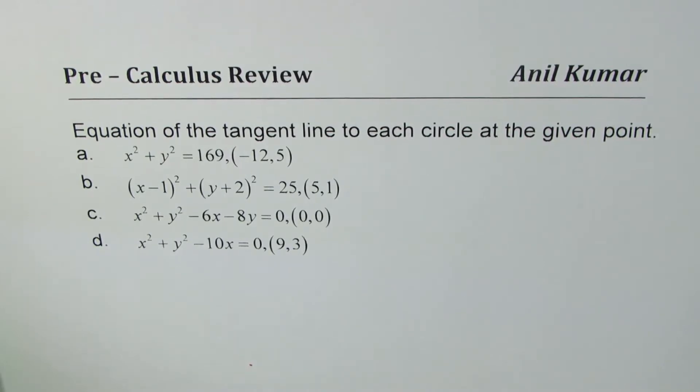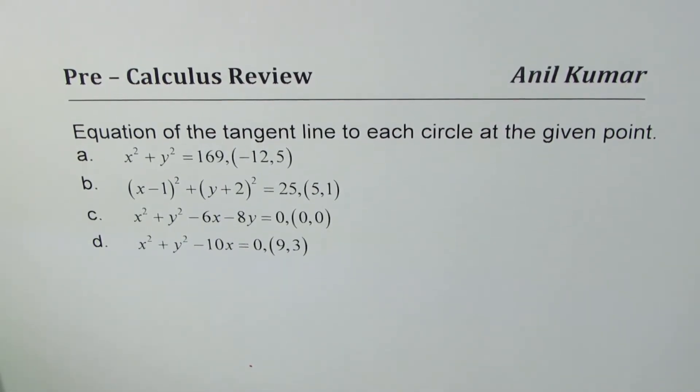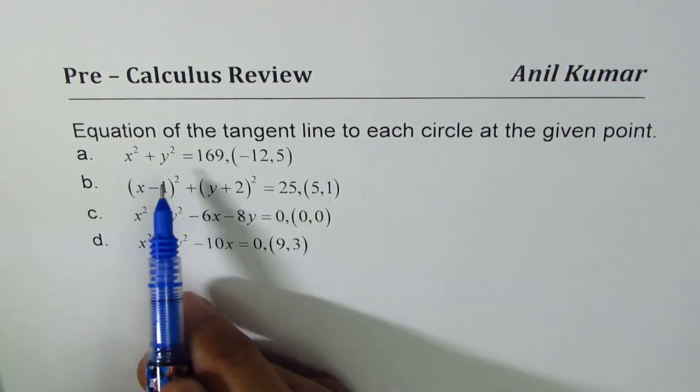The question here is we need to find equation of the tangent line to each circle at the given point. Four different equations are given, slightly different forms, but they are all equations of circles.